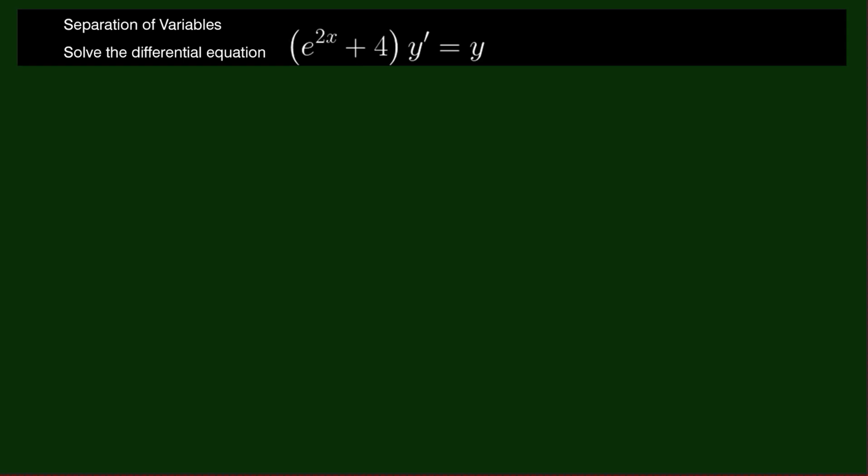Solve the differential equation: the quantity e to the 2x plus 4 times y prime equals y.